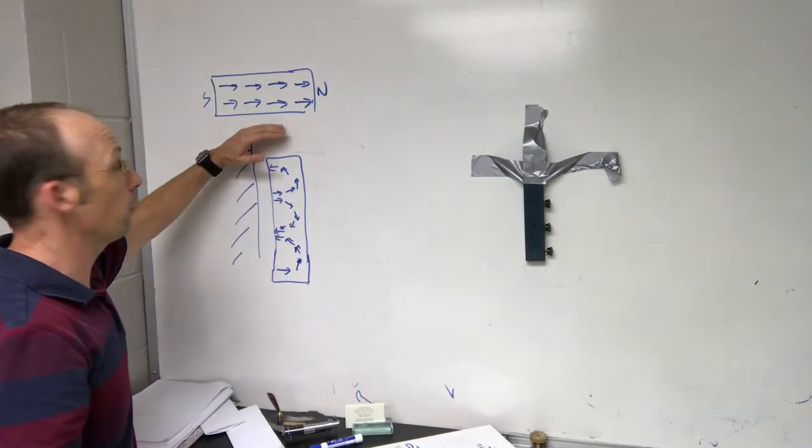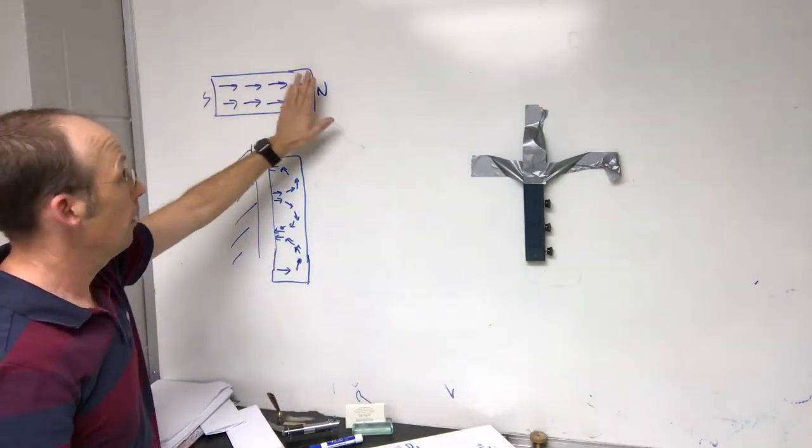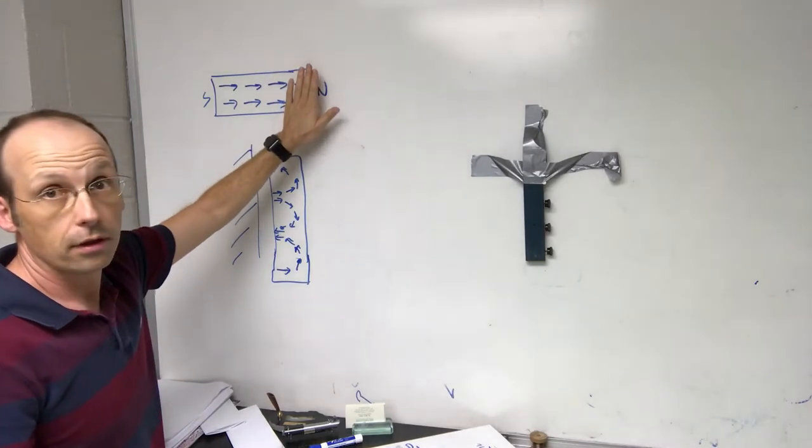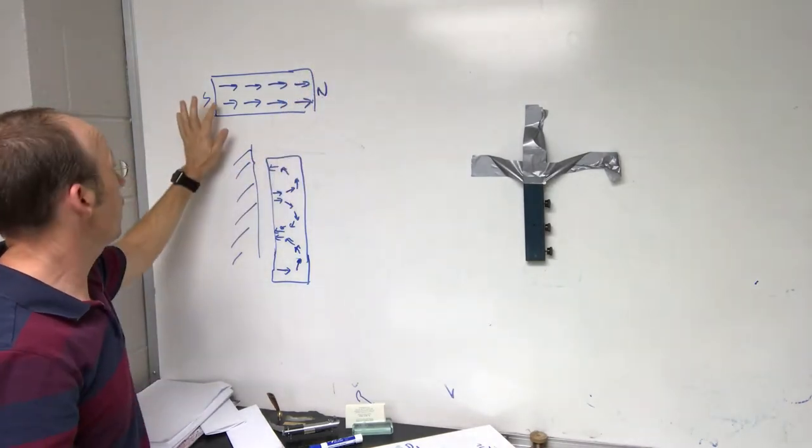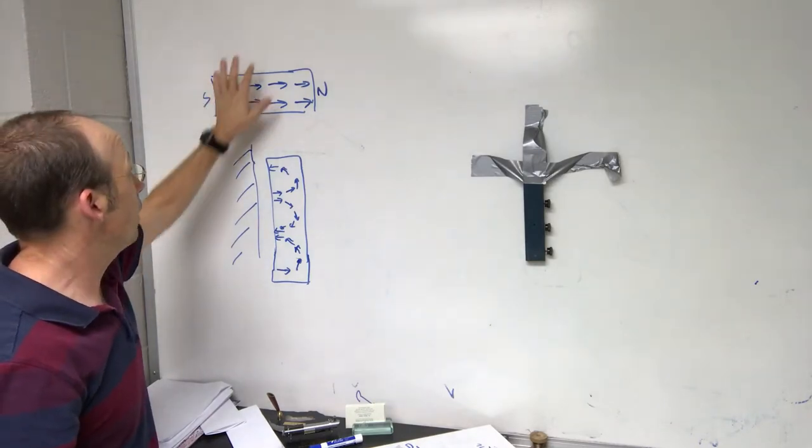So this would be a normal magnet. You see here, these represent the little domains—they're all lined up. So on this end I have north poles, and so it acts like a north pole. And here I have the south ends of the domains—acts like the south pole.